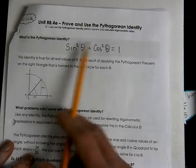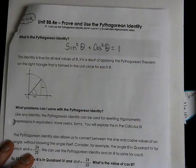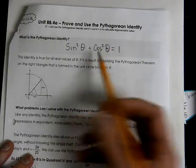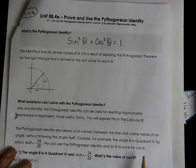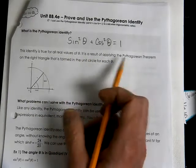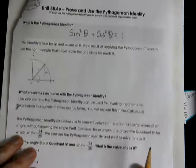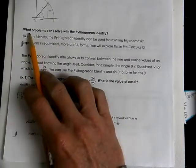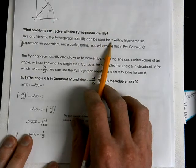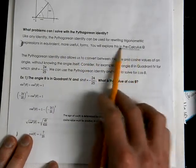When we're solving for one of our trig functions, we can use this Pythagorean Identity to help us calculate it. You have other skills that you probably already understand, but this is just another option to use. This identity is true for all real values of theta. It is a result of applying the Pythagorean Theorem to a right triangle that is formed in the unit circle. The Pythagorean Identity can be used for rewriting trigonometric expressions in equivalent or more useful forms. You'll do a lot of identities in pre-calc.